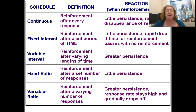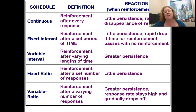Fixed interval reinforcement is about time — you get reinforcement after a set period of time. For example, if you answer questions correctly within five minutes, you get a piece of candy. There's little persistence: if after five minutes you don't get the candy, you just stop doing it. Variable interval means I give reinforcement after varying lengths of time — sometimes one minute, sometimes five, sometimes ten. That gives greater persistence, because if you don't know when it's coming, you're more likely to keep going.